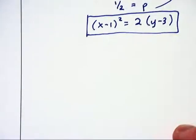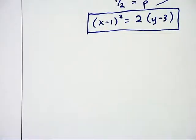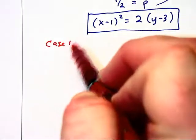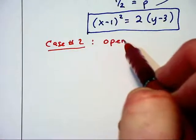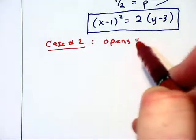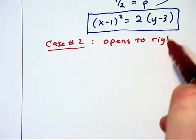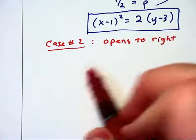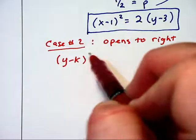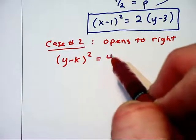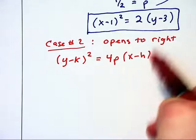Now we're going to move into case number 2. In case number 2, this curve is going to open to the right. And that will not be a function, therefore, y is squared, and we have y minus k squared equals 4p times x minus h.